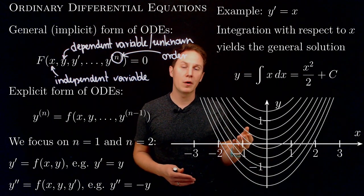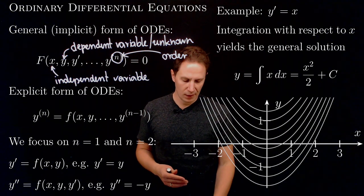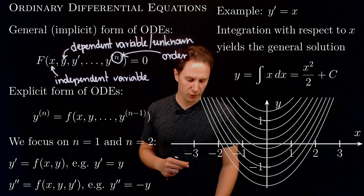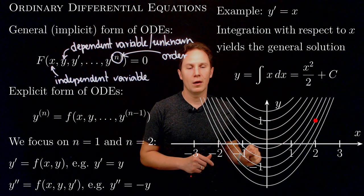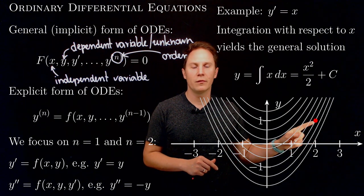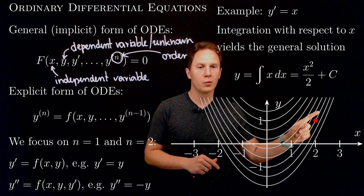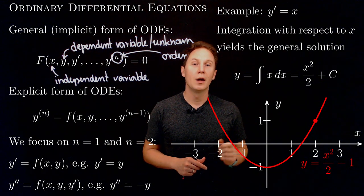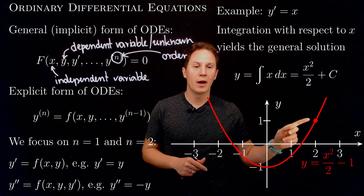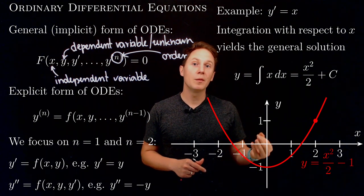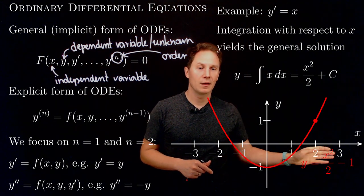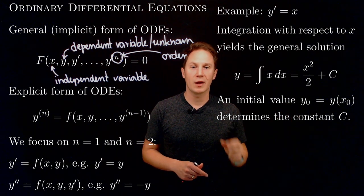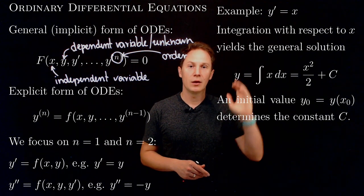We need more information if we just want to single out one solution. The one piece of information we need is just a single value of this unknown function. Once we know the unknown function at one point along the x-axis — say at x equals 2, the function's value is 1 — that singles out just one parabolic arc, namely the solution x squared over 2 minus 1. That initial value determines the constant of integration, giving us c equals negative 1. This is why an initial value — a known value for the unknown function at a single point — determines the constant of integration c in a first order ODE.